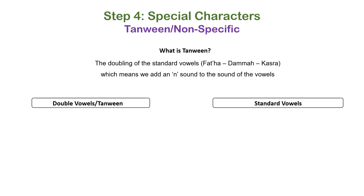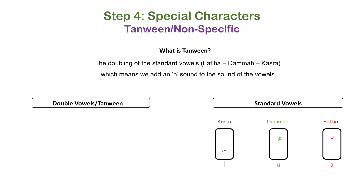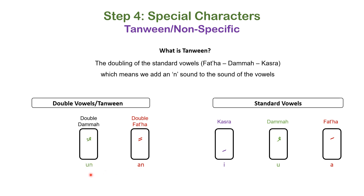Let's look at the standard vowels and then the doubled vowels. Standard vowels — fatha, dhamma, and kasra — make the sounds 'a', 'u', and 'e'. Now with doubling: double fatha, or tanwin fatha, makes the sound 'an'; double dhamma goes from 'u' to 'un'; and double kasra, or tanwin kasra, goes from 'e' to 'in'. So we get 'an', 'un', 'in' from 'a', 'u', and 'e'.